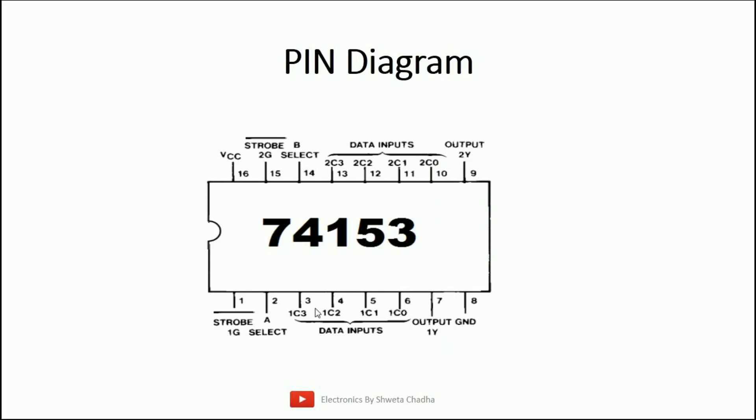The 74153 IC has 16 pins total. Starting from the notch, pin 1 is at the bottom-left, numbered 1 through 8 going down, then 9 through 16 going up in the anticlockwise direction. Pin number 1 is the strobe pin, written as strobe-bar, meaning it is an active-low pin. An active-low pin must receive a low signal to become active, so pin 1 must be connected to ground.